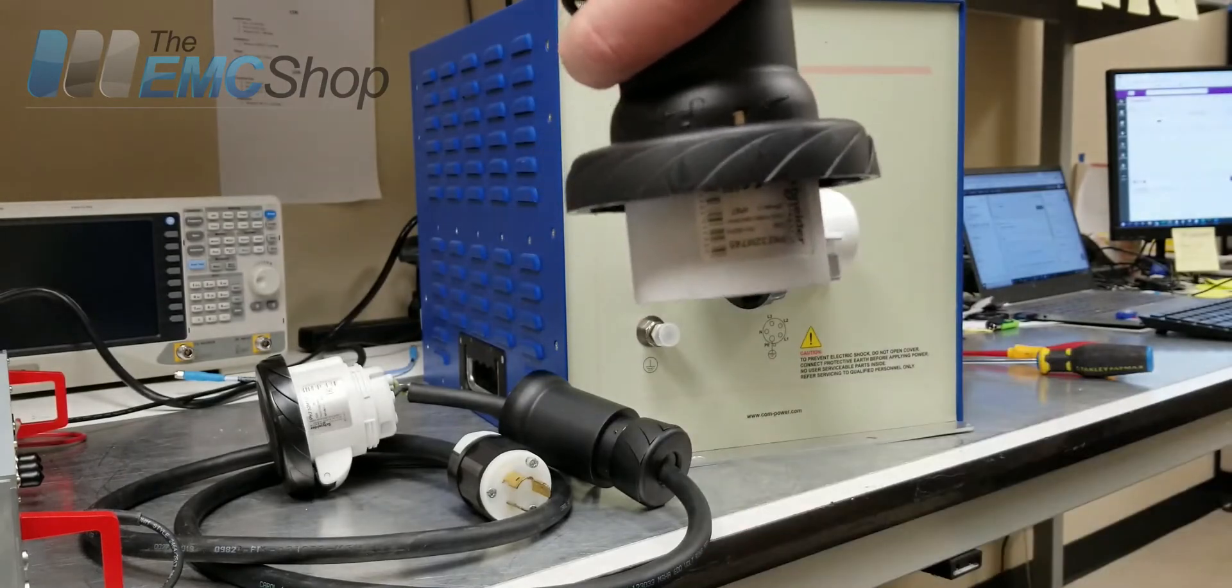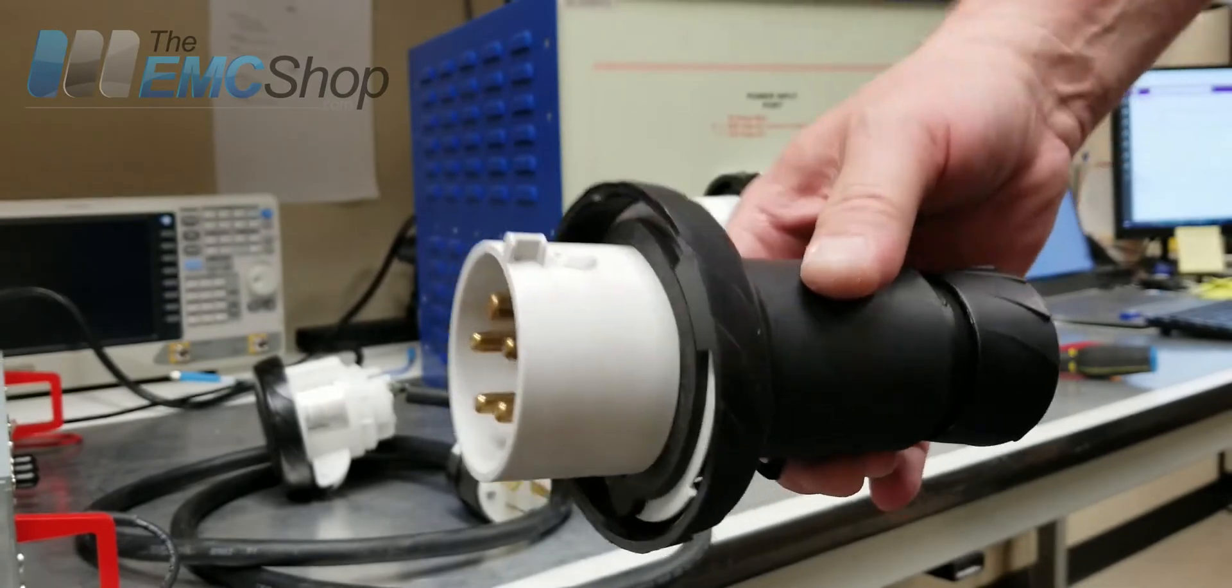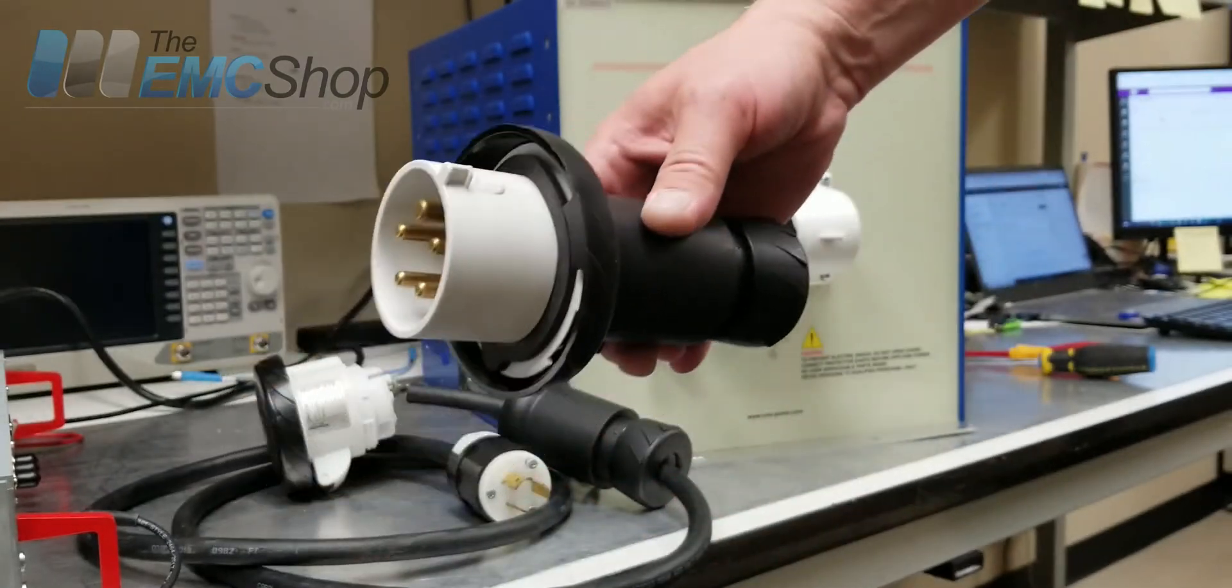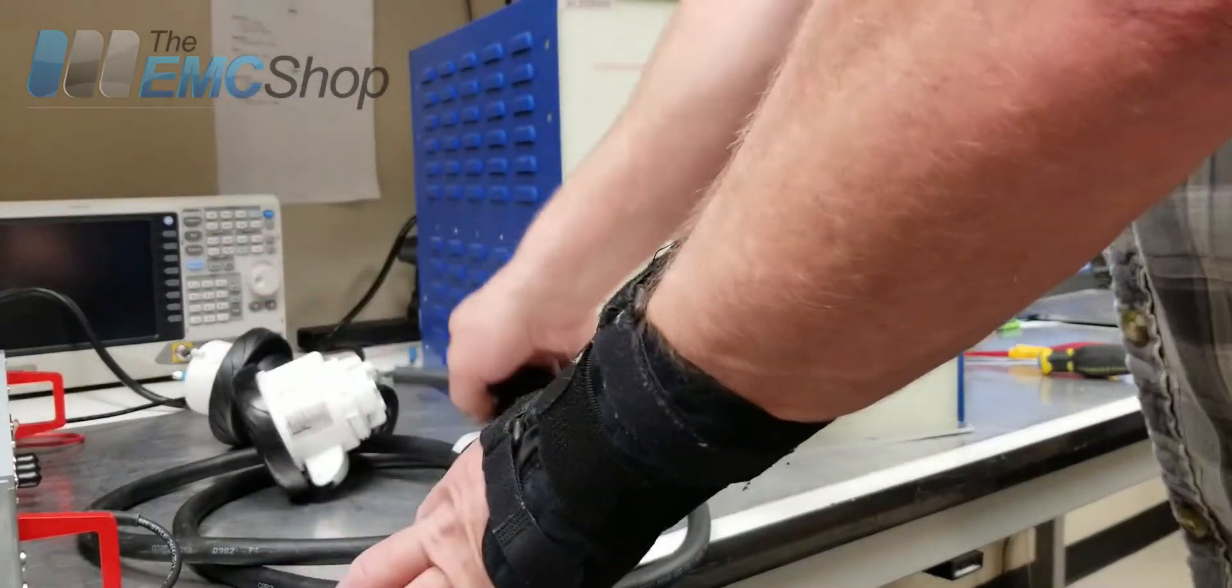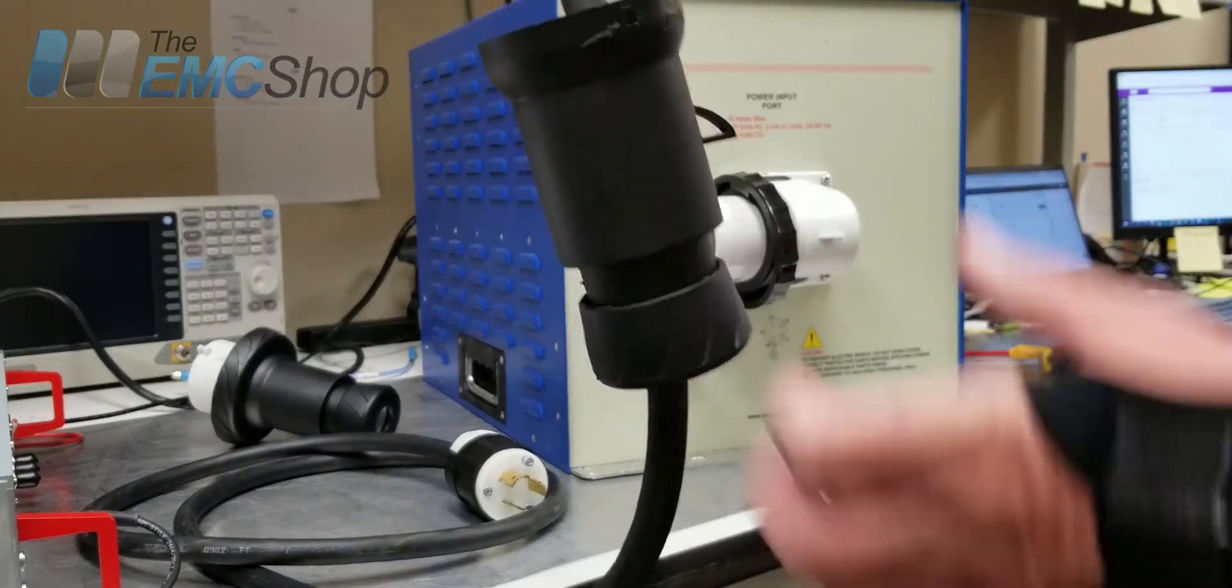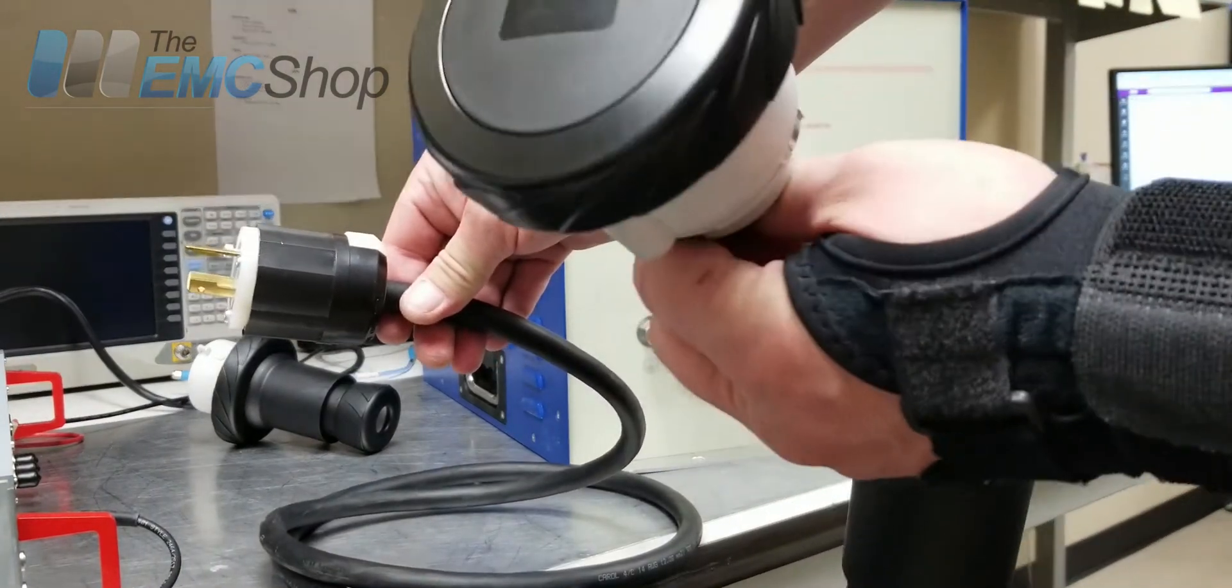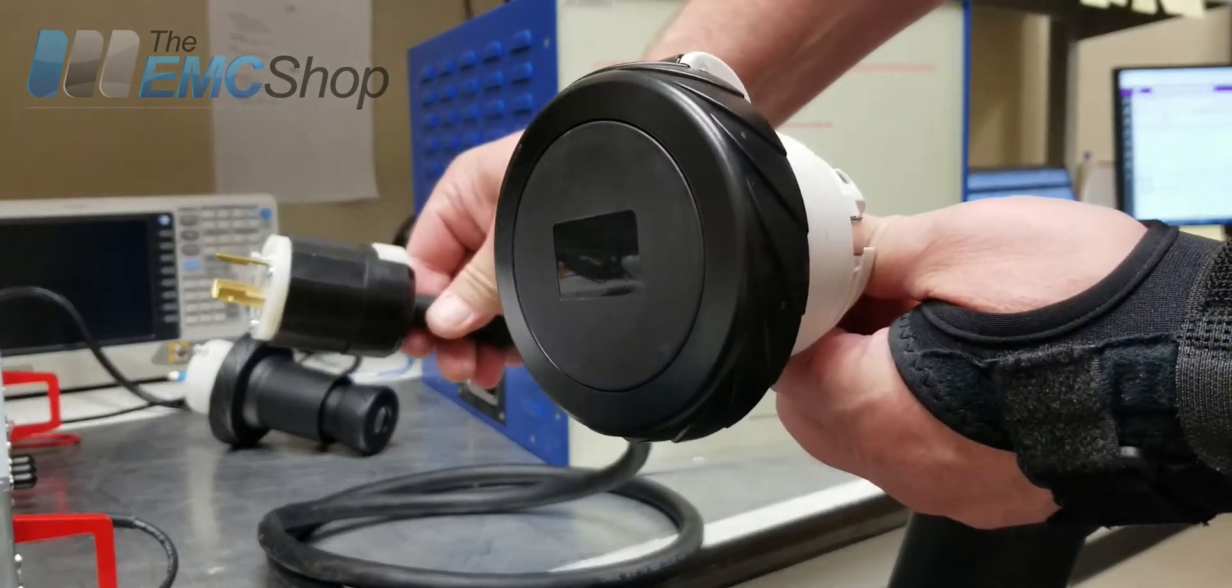Then the cable will be hanging out here. I'll show you exactly what I'm talking about. I have already connected this up and ran the cable through. This end here will be connected up to the supply power that's going to the LISN.